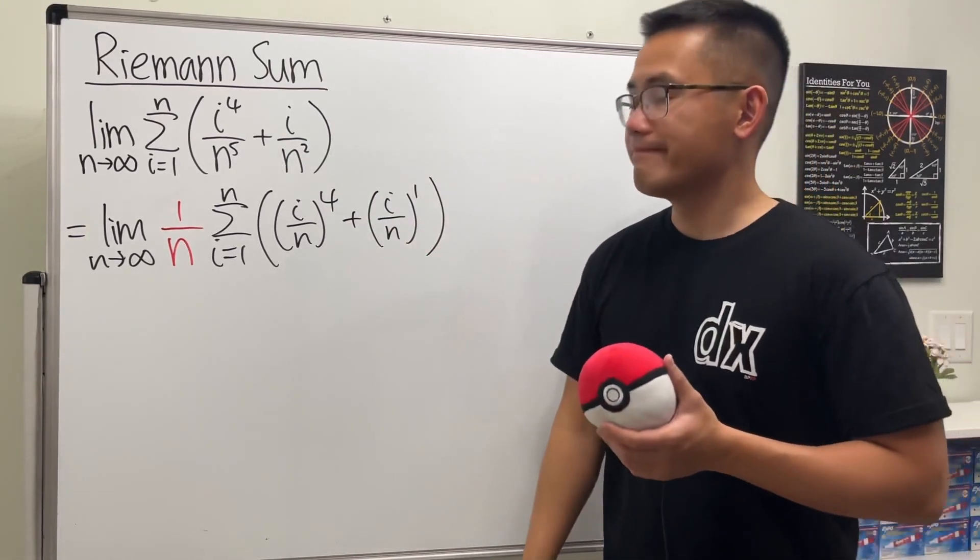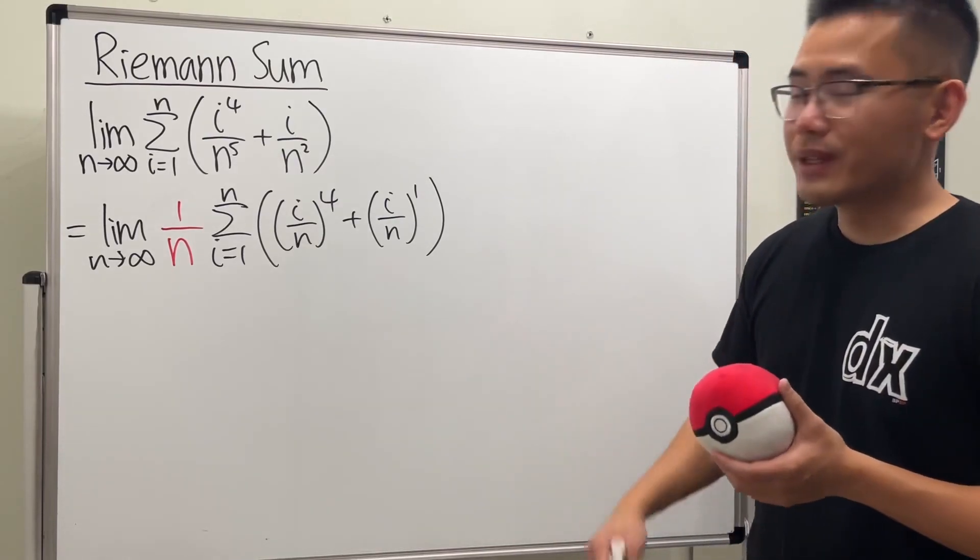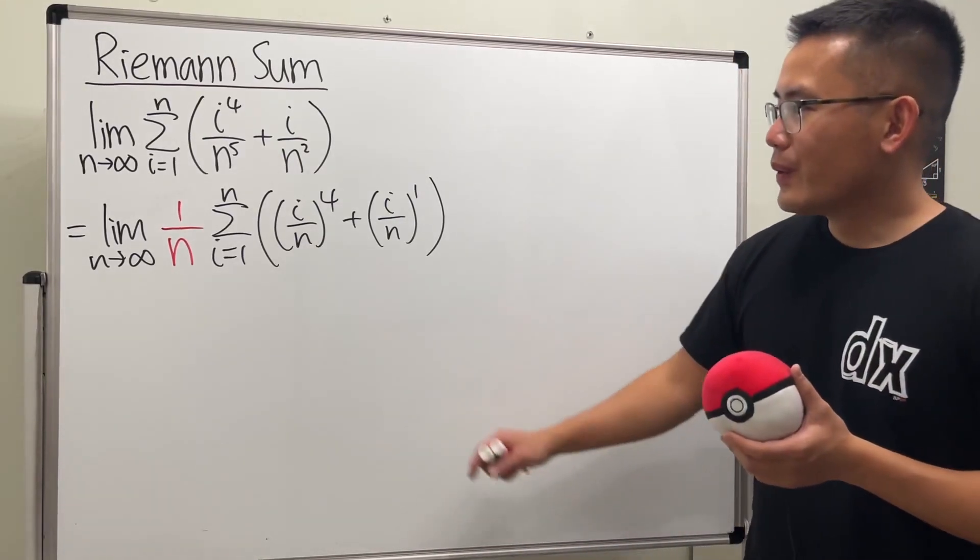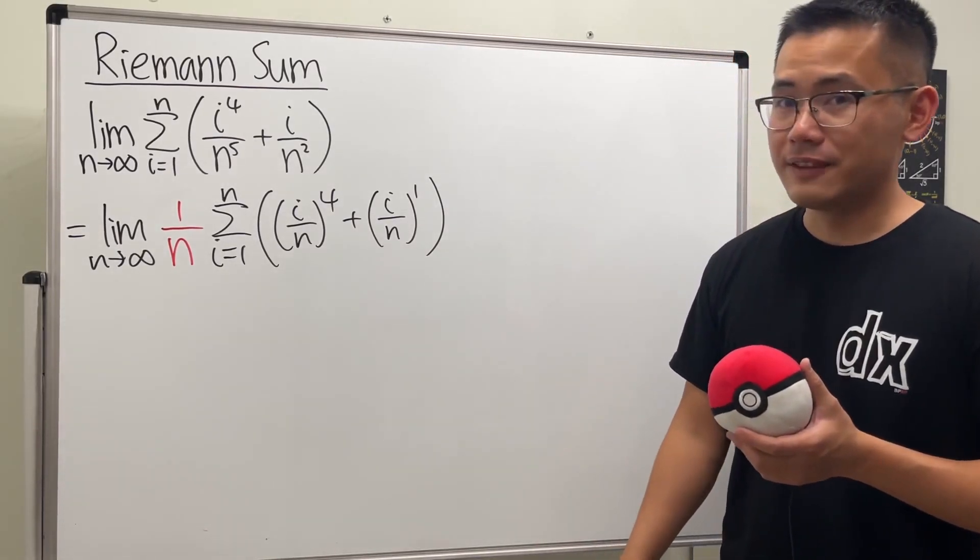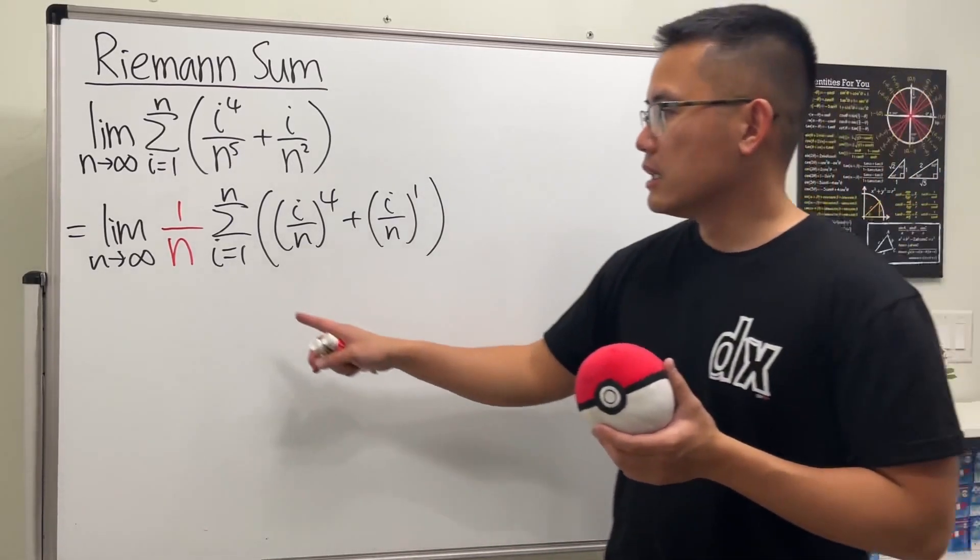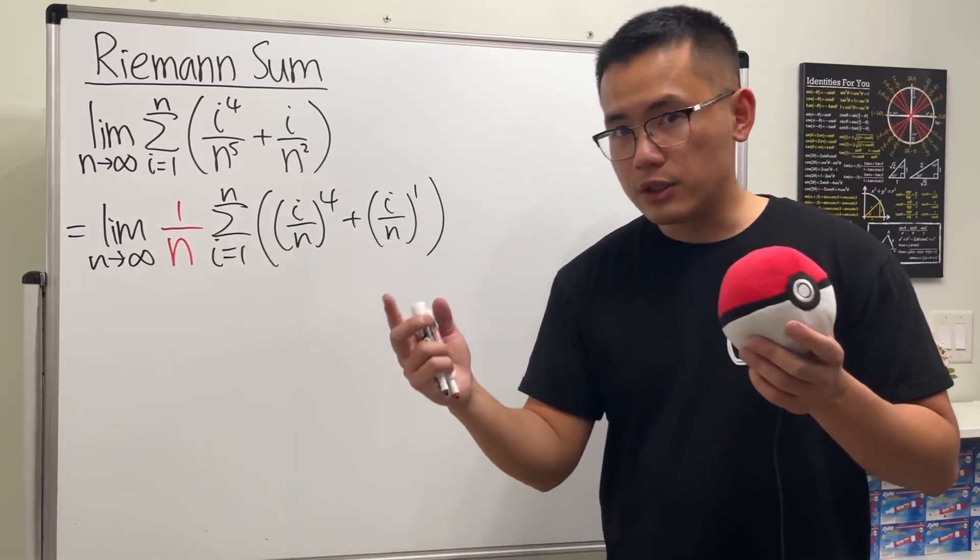So what does this mean? Well, we have x to the fourth power plus x. All right, so that's the function, and then we can see that the interval is just going from zero to one.